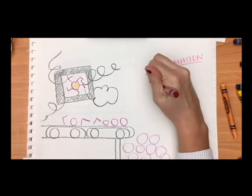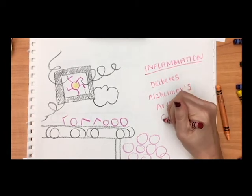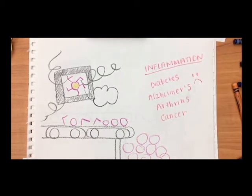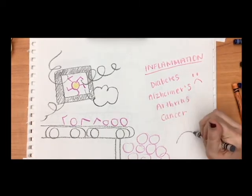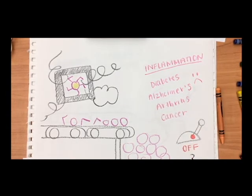our bodies have excess or chronic inflammation, which can contribute to a wide variety of diseases like diabetes, Alzheimer's, arthritis, and cancer. Therefore, our cells contain switches to turn off the inflammation, but these switches are still very mysterious to scientists today.